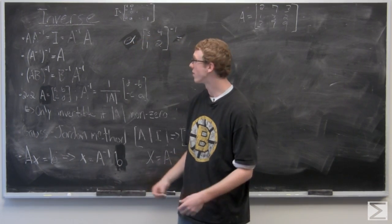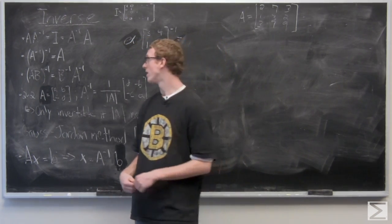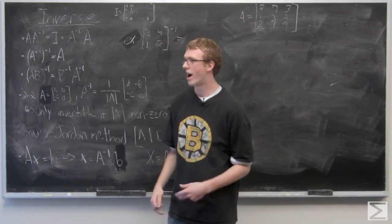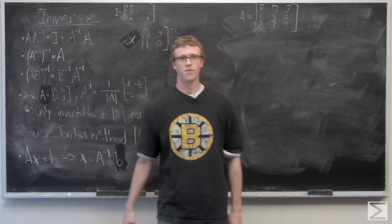So you can only take the inverse of a square matrix, and essentially what that looks like is A times A inverse is going to equal I, which also equals A inverse times A.